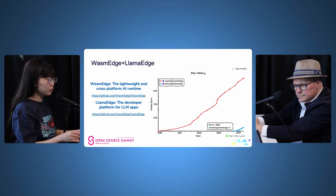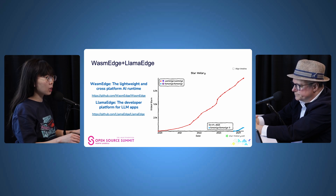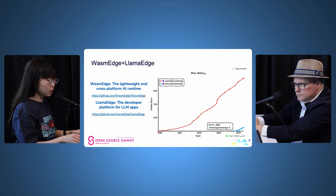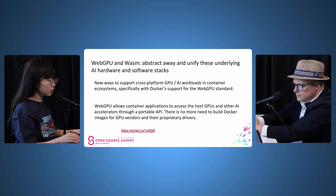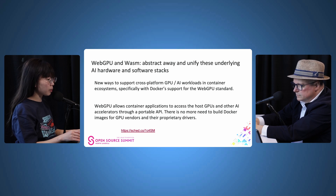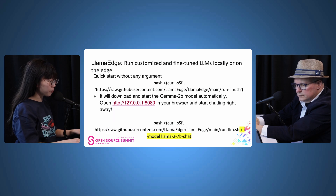We're going to talk about LlamaEdge — a large language model tool built on top of WasmEdge. It's an open source project you can use to run your own self-hosted large language models with Wasm. It's really fast and portable. There's also work with Docker and the Kubernetes ecosystem to make WebAssembly truly portable across different devices.